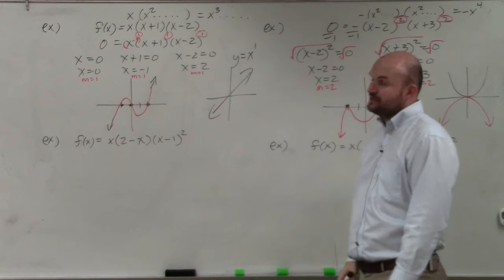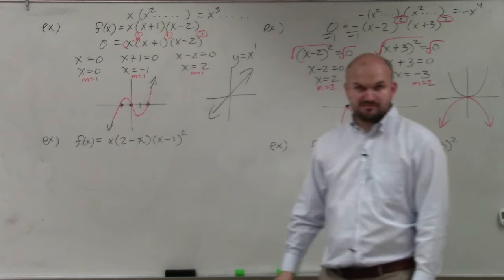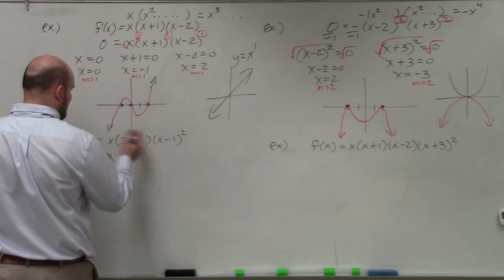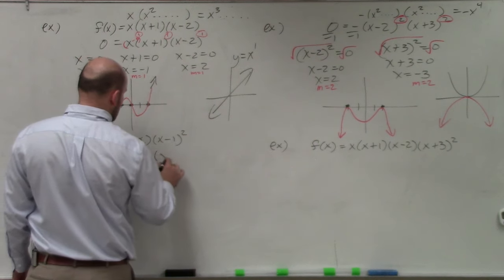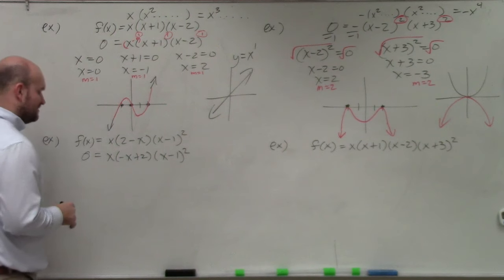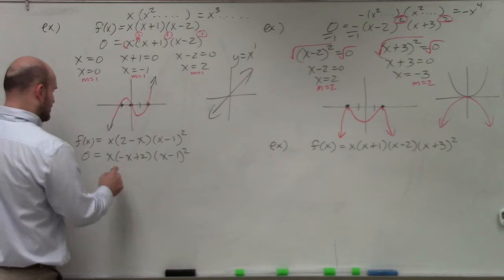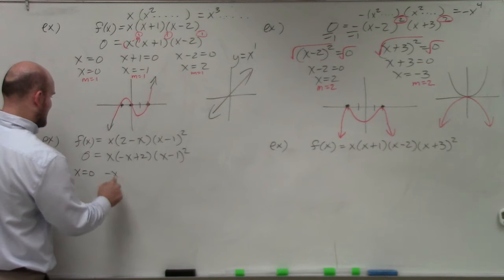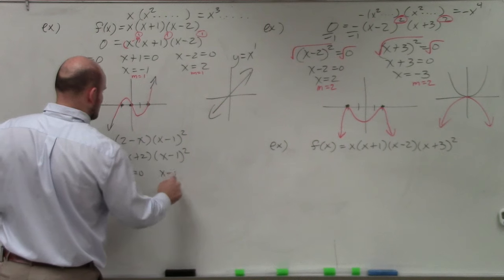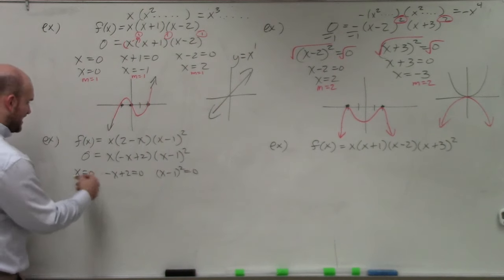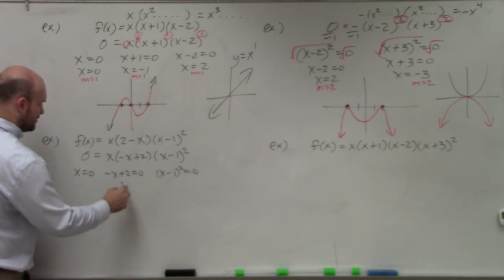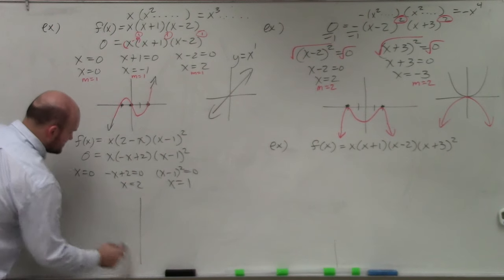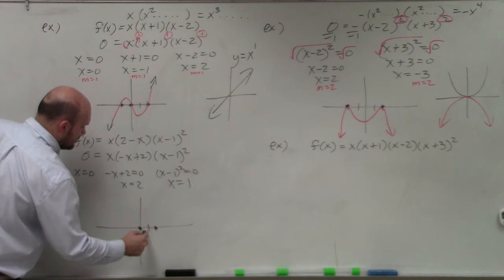This next example can be confusing because the variables are switched around, so make sure you rewrite it. Replacing the variable with x: 0 equals negative x plus 2, times (x minus 1) squared. Applying the zero product property gives x equals 0, negative x plus 2 equals 0, and (x minus 1) squared equals 0. Solving: x equals 0, x equals 2, and x equals 1. So my zeros are at 0, 2, and 1.